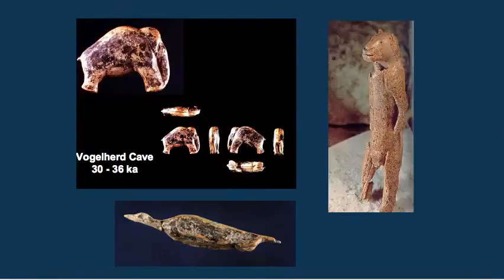We also have definite art objects — some of the very earliest representational art discovered. These are animal figurines: a mammoth from Vogelherd cave dating to around 36,000 years ago, a water bird, and a lion figurine that looks like a human figure with a lion head. Behavior is starting to change, things are getting more sophisticated, tools are getting more sophisticated, and we're starting to see evidence of really human-like behavior.